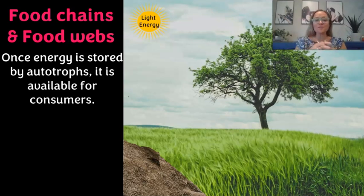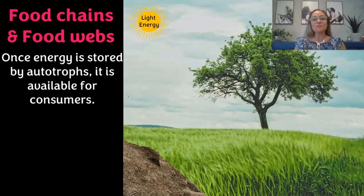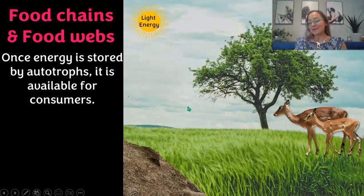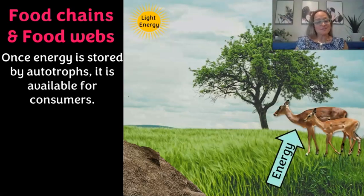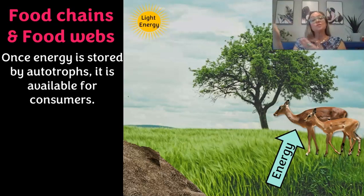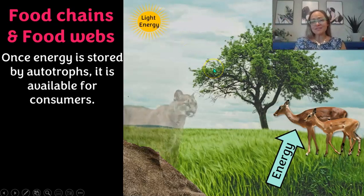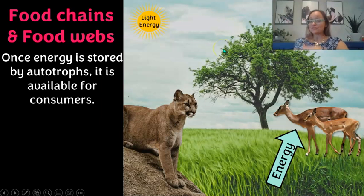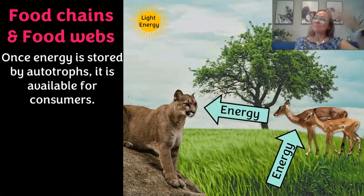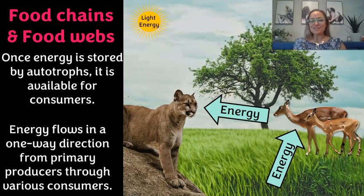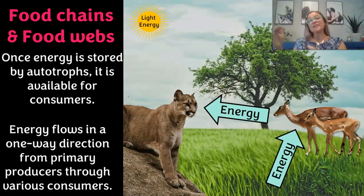Once energy is stored by autotrophs or primary producers, it is available for consumers — organisms that need to eat to obtain their energy. Here we have deer, which are herbivores that eat grass. The flow of energy passes from the autotroph to the deer, and if the deer get eaten by a predator, the energy passes from the deer to that predator. Energy flows in a one-direction pathway from producers through various consumers.